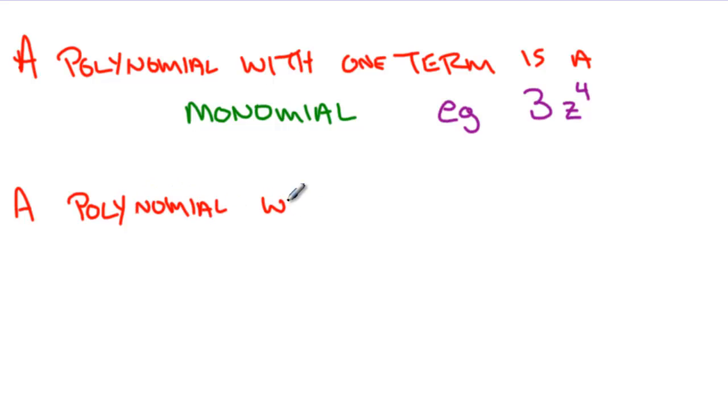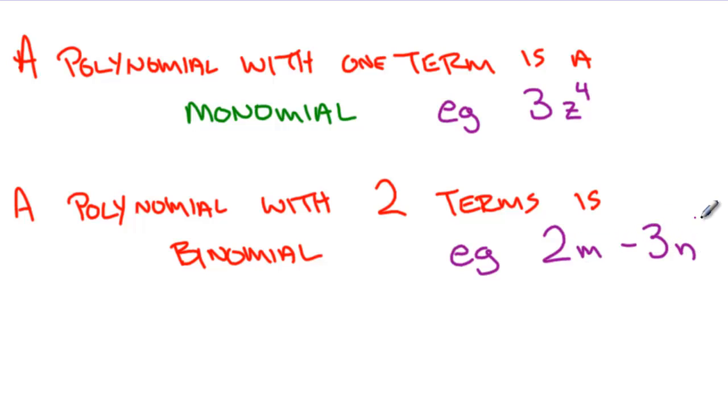A polynomial with two terms is a binomial. For example, 2m - 3n². That's a two term polynomial. We can call that a binomial.